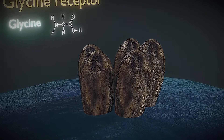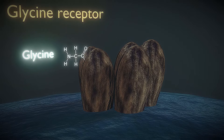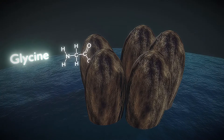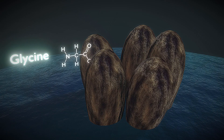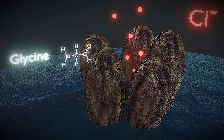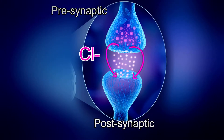But how does this happen? Glycine is a major post-synaptic inhibitory neurotransmitter in the mammalian spinal cord and brain stem. Binding of glycine leads to the opening of the glycine receptor integral anion channel, and the resulting influx of chloride ions hyperpolarizes the post-synaptic cell, thereby inhibiting neuronal firing.